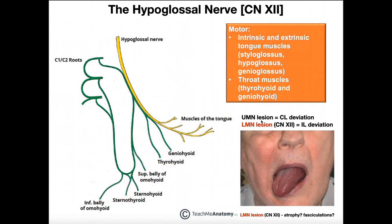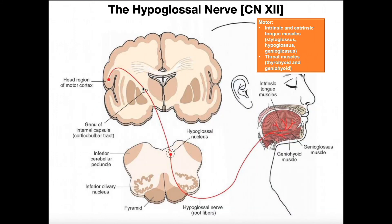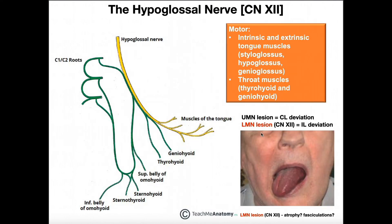However, if there is an upper motor neuron lesion, we would see contralateral deviation, because the upper motor neuron crosses over before it synapses with the lower motor neuron in the hypoglossal nucleus. So if the tongue deviates to the right, it would actually be a left upper motor neuron lesion. Generally, most of the time these will be lower motor neuron lesions — the actual hypoglossal nerve is cut, transected, or damaged — so you get ipsilateral deviation.